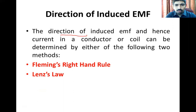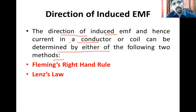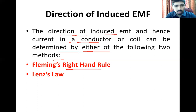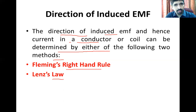The direction of induced EMF and hence current in a conductor or coil can be determined by either of the following two methods. One is Fleming's right-hand rule, and the other one is Lenz's law. So there are two rules to get the direction of induced EMF in an electromagnetic circuit.